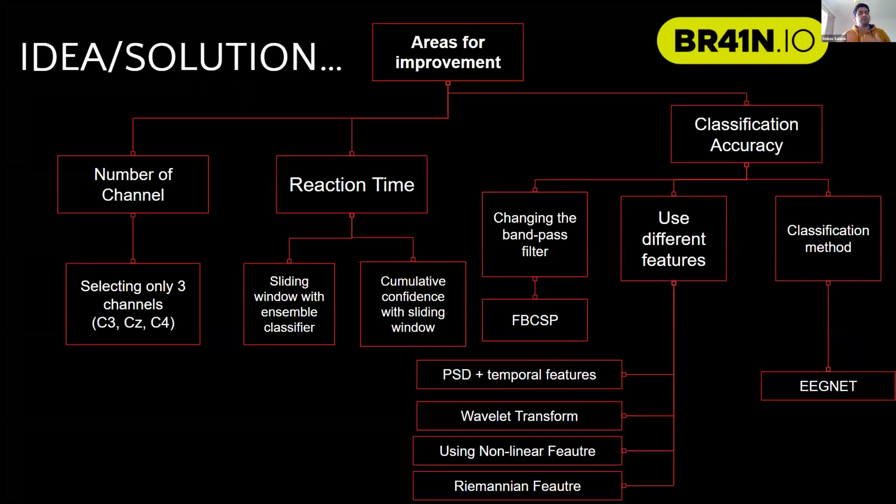We first thought about the different categories, different areas of these BCI systems that we can improve. The first thing could be reducing the number of channels. It's very valuable if you can have the same accuracy with lower number of channels.